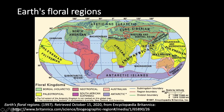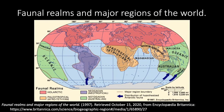The last floral kingdom is the Antarctic kingdom, which includes the southern tip of South America including the Chilean coast, New Zealand, and the Antarctic and sub-Antarctic islands. There is not much species richness here, but there are five genera that are common to this kingdom. That concludes the earth's floral regions.